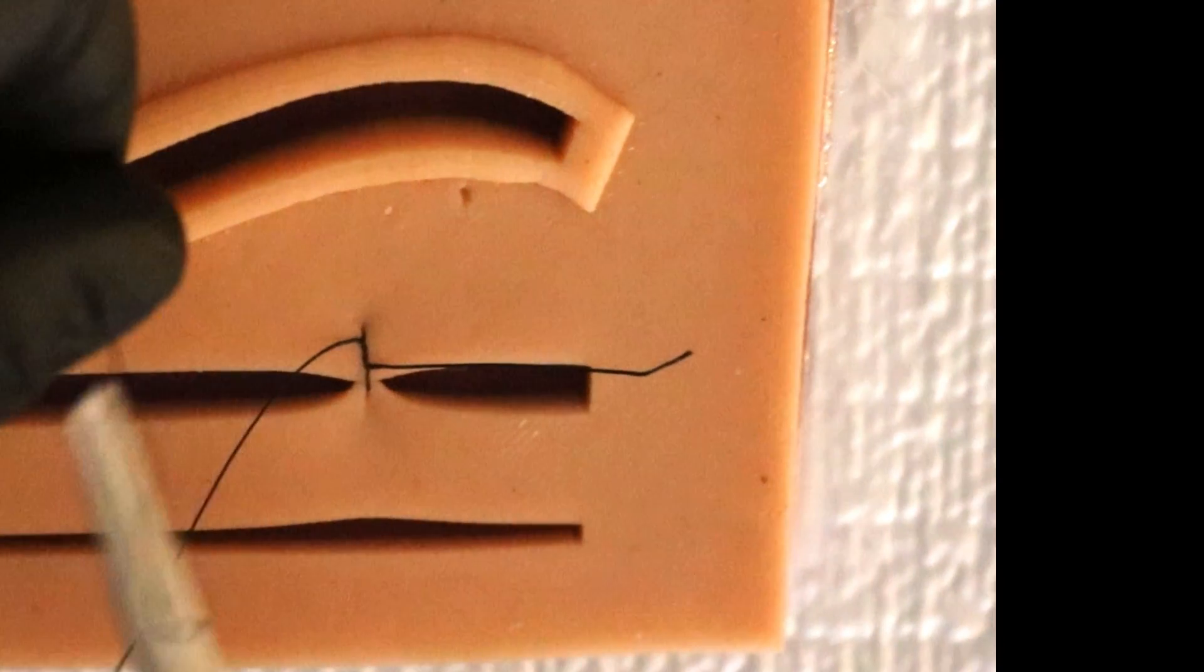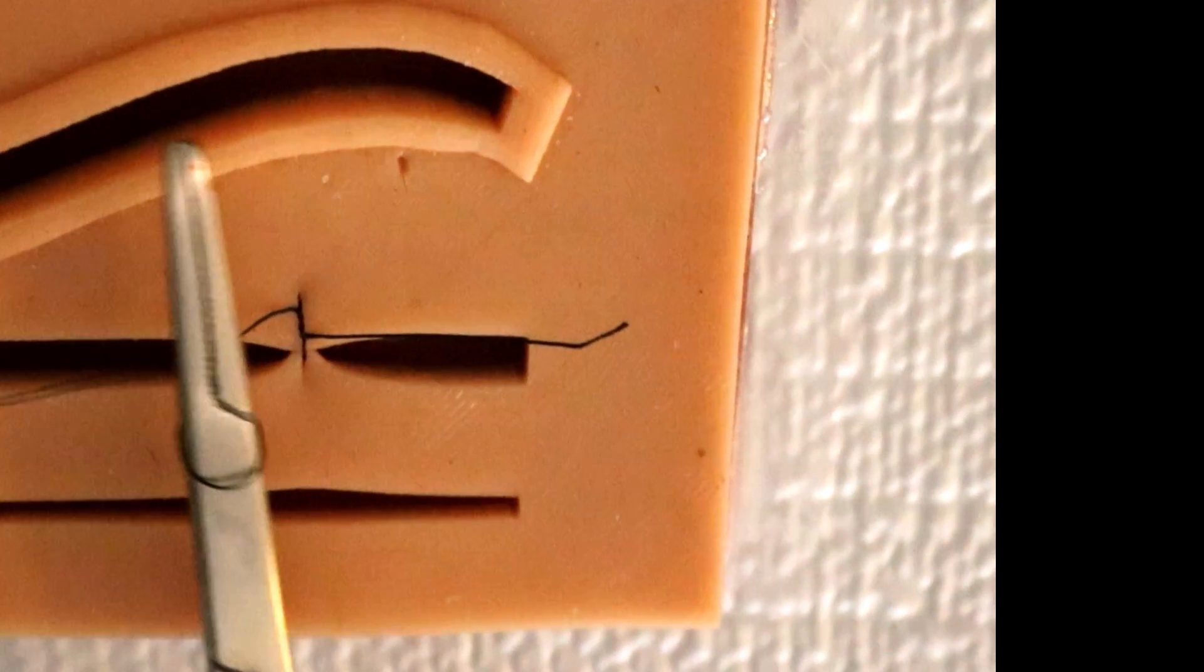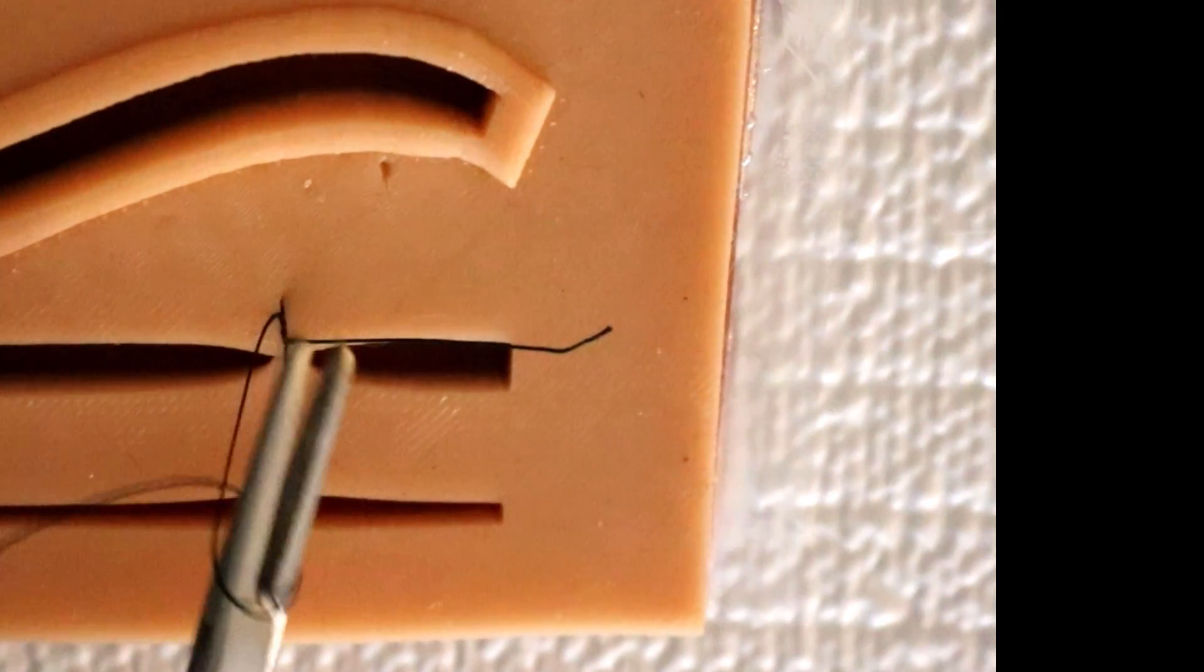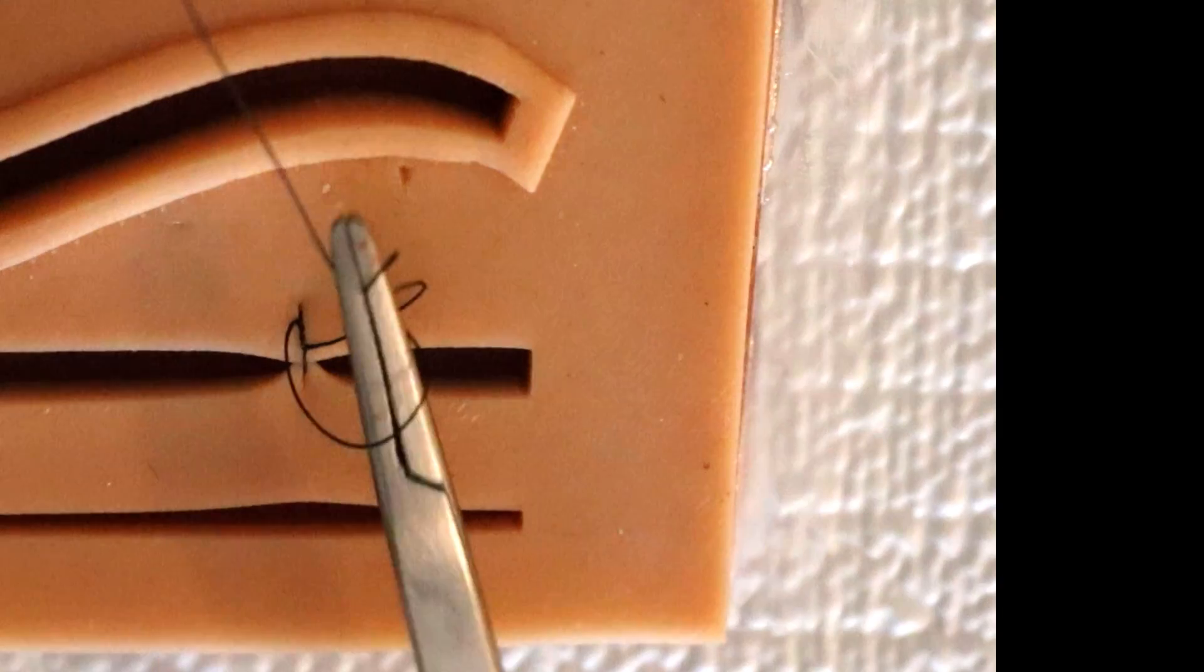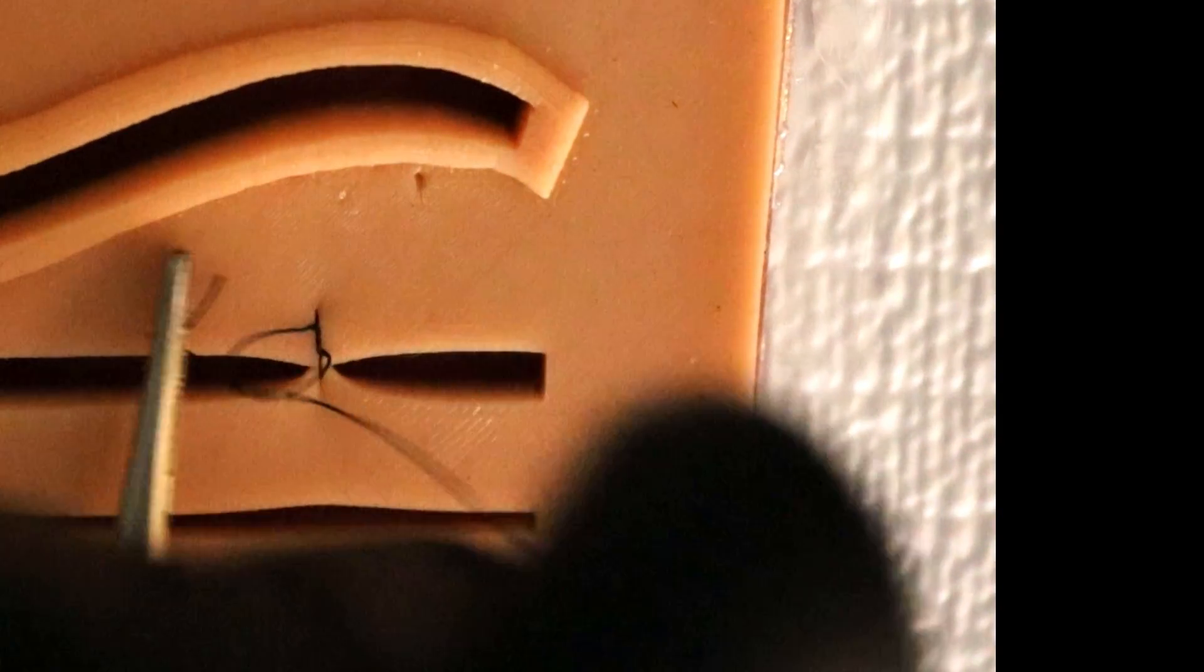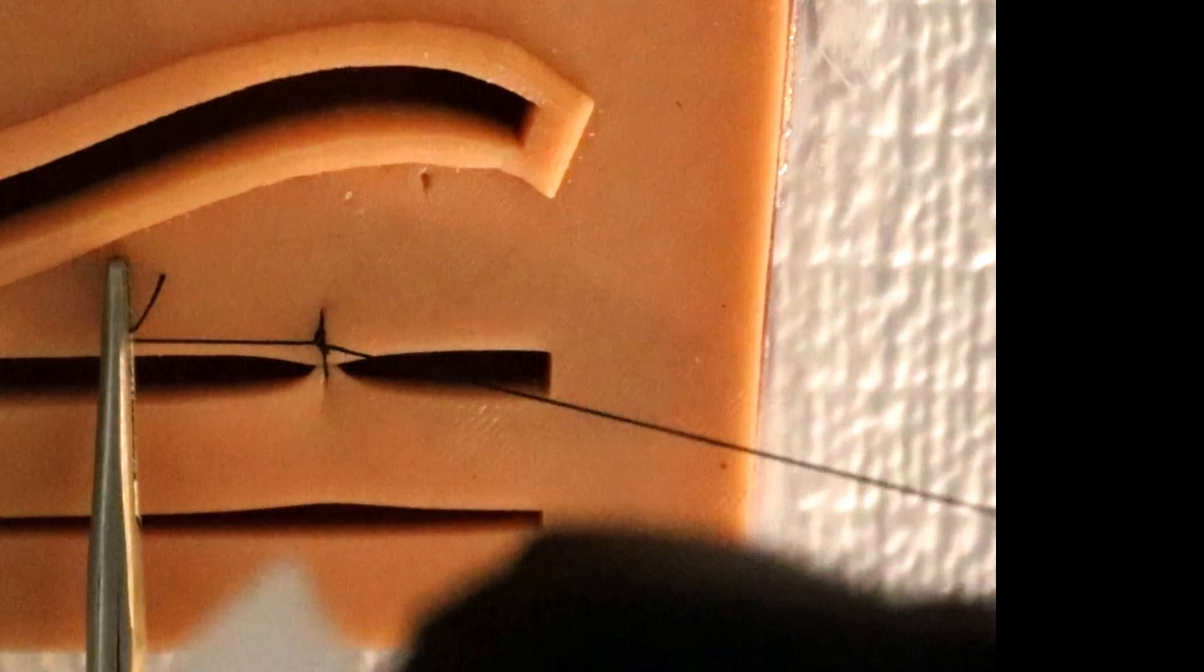Second throw. One loop. And you grab the tail and you're gonna pull through. Again, hands crisscrossing. How much of a tail you should leave? Well that's a great question.